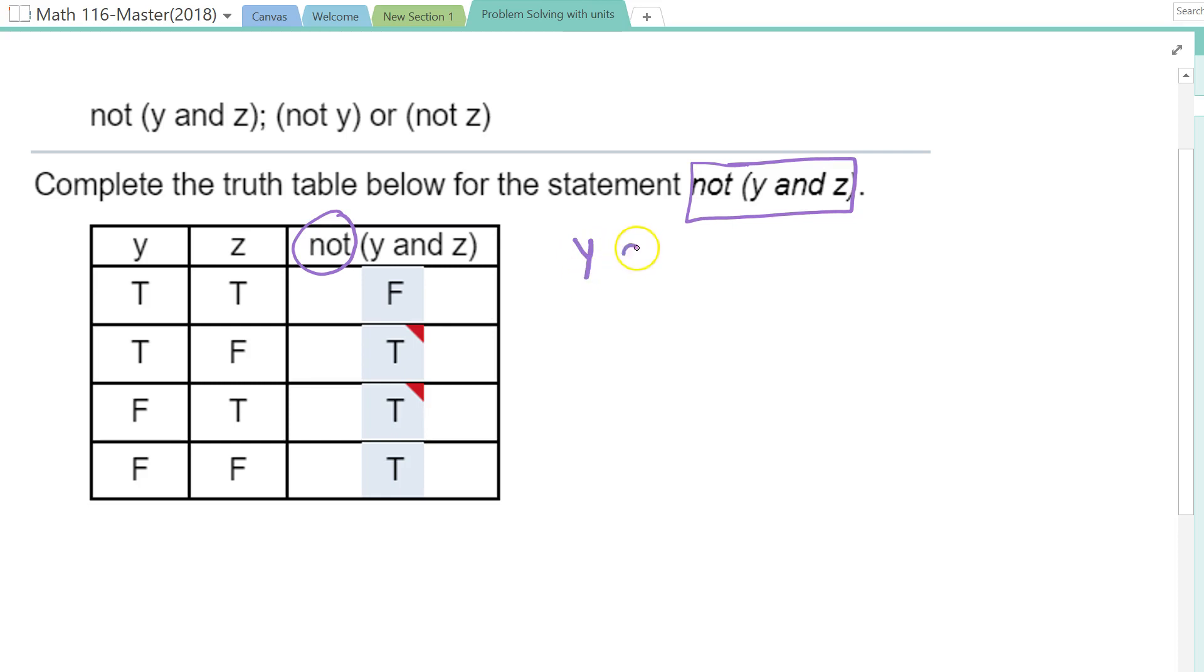So if you want to do the truth table for Y and Z, which is what I think you did, where true, true, so Y and Z would be true.